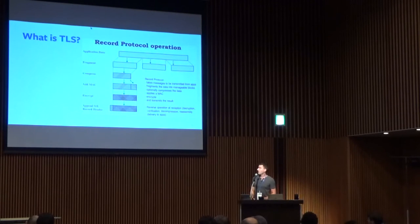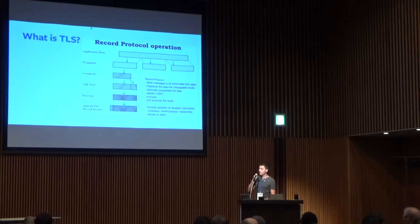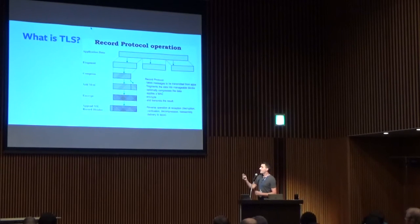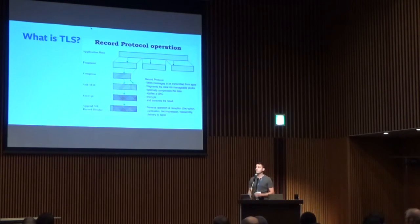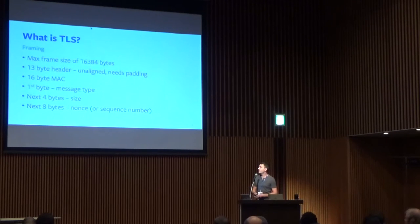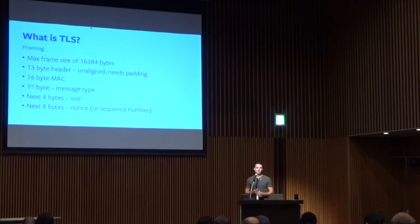The record protocol looks something like this. Application data for TLS comes in as a stream. It's fragmented into the maximum message size, and it is optionally compressed — though compression has been broken at one point, so no one compresses anymore; they compress their data first. Then a MAC is added and it is encrypted. Typically these now happen at the same time, especially with GCM protocols. Finally, the header is attached to the front of the record. The max frame size is four pages, 16K. The header is 13 bytes, which is a little bit annoying because it's unaligned, which doesn't play quite as nicely with the AES-NI hardware routines. It means you have to pad everything out.